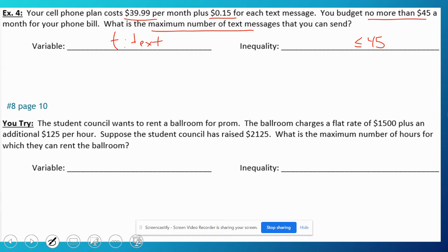So I have $39.99 plus 15 cents for every text, and that's my total cost. So I can subtract $39.99 and divide by $0.15.